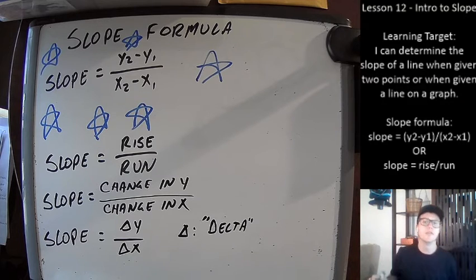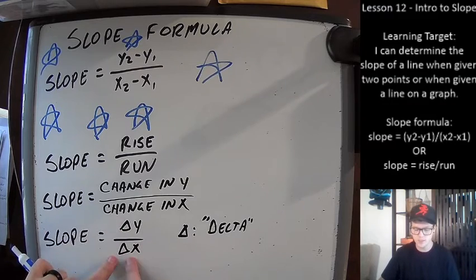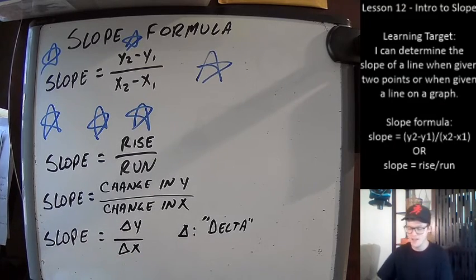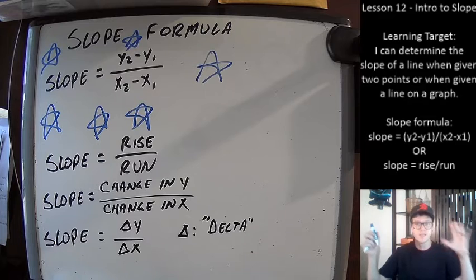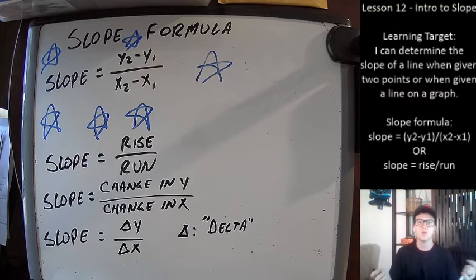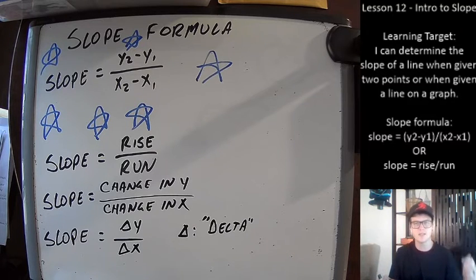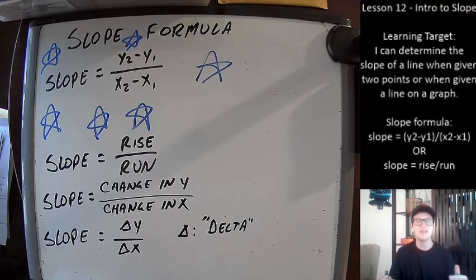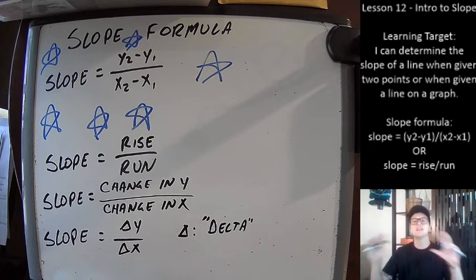Here's our last one. Another way you'll see the slope formula written uses a triangle next to the y and a triangle next to the x. That triangle is actually a letter from the Greek alphabet — like pi or alpha or beta — and its name is delta. You'll see it outside of math too, with people talking about changes in numbers or stock prices.